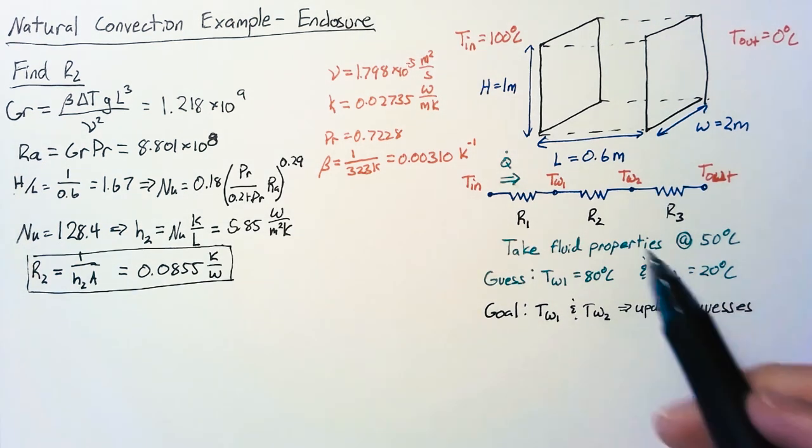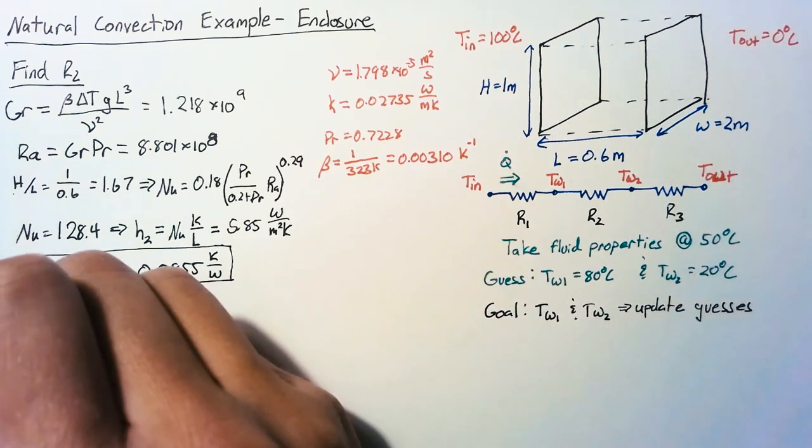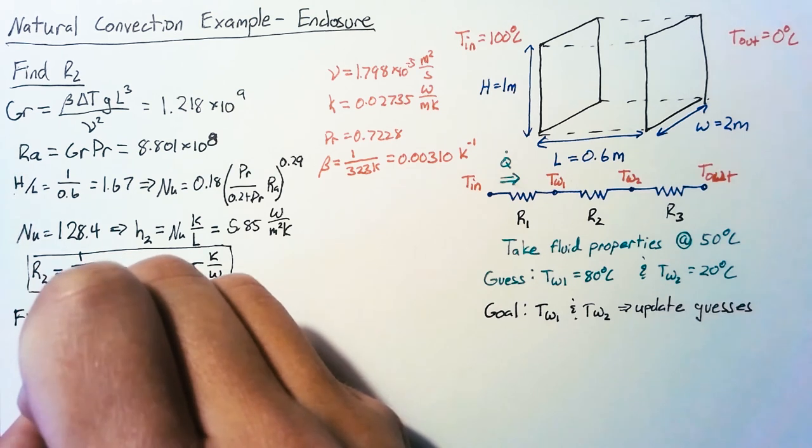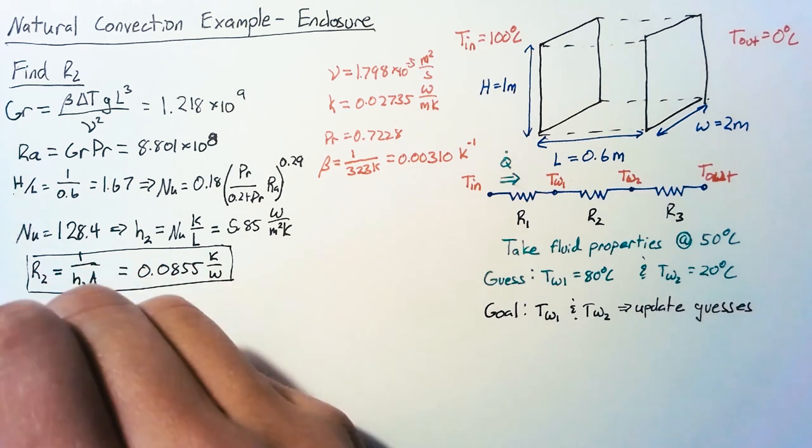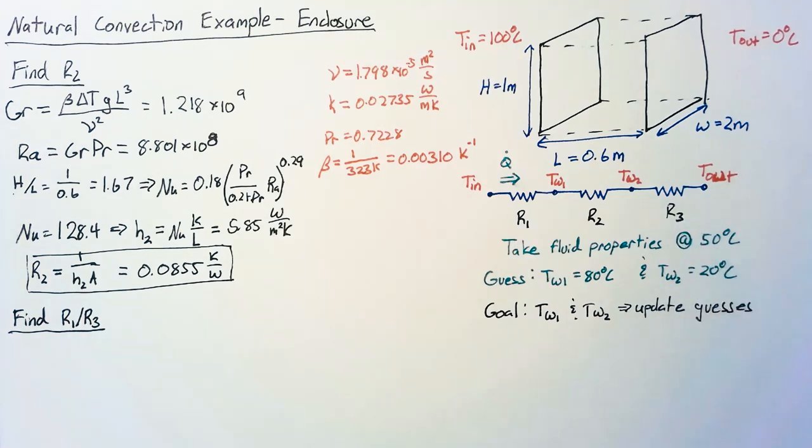Now like I said we can apply symmetry to this problem because of this assumption we made. That means that we only need to find one of the two other resistances because both R1 and R3 should be equal because of that symmetry.